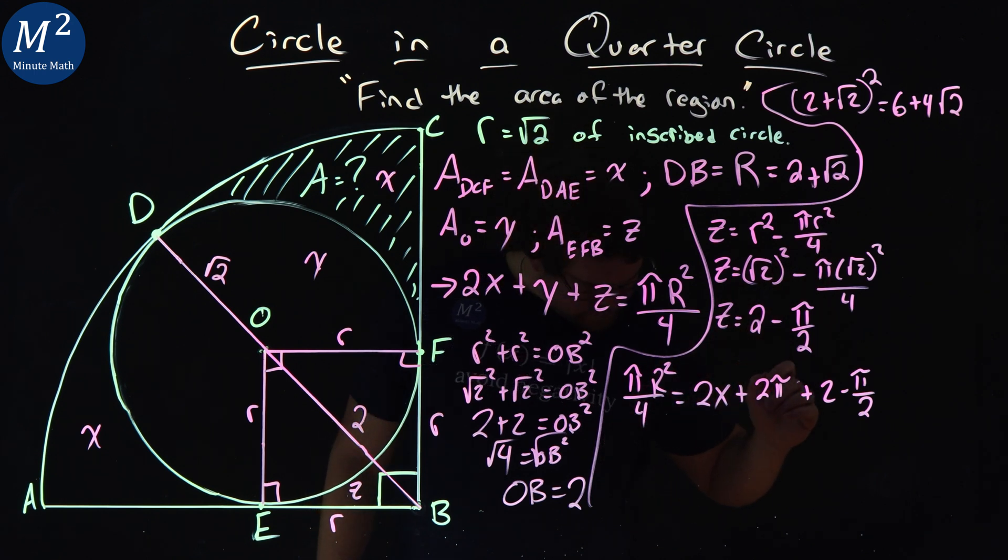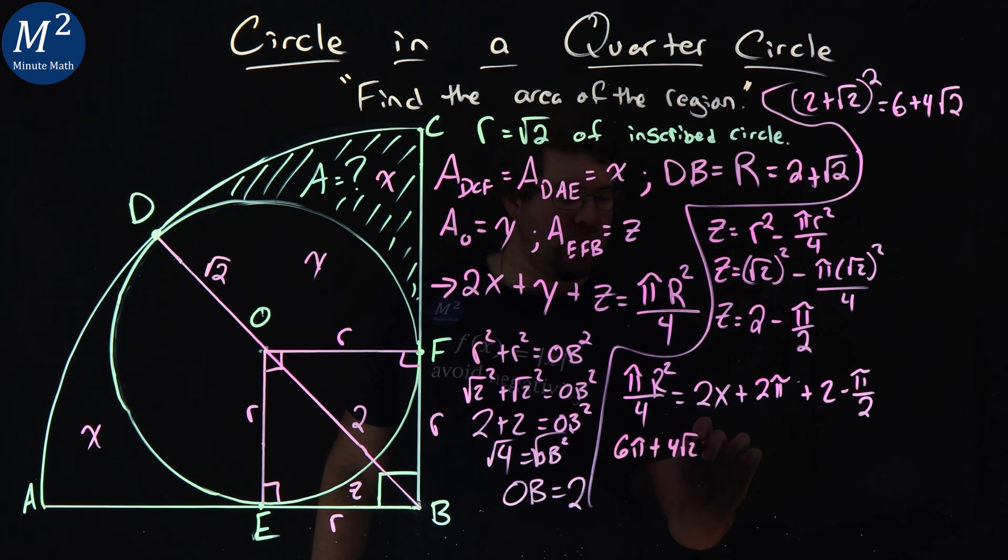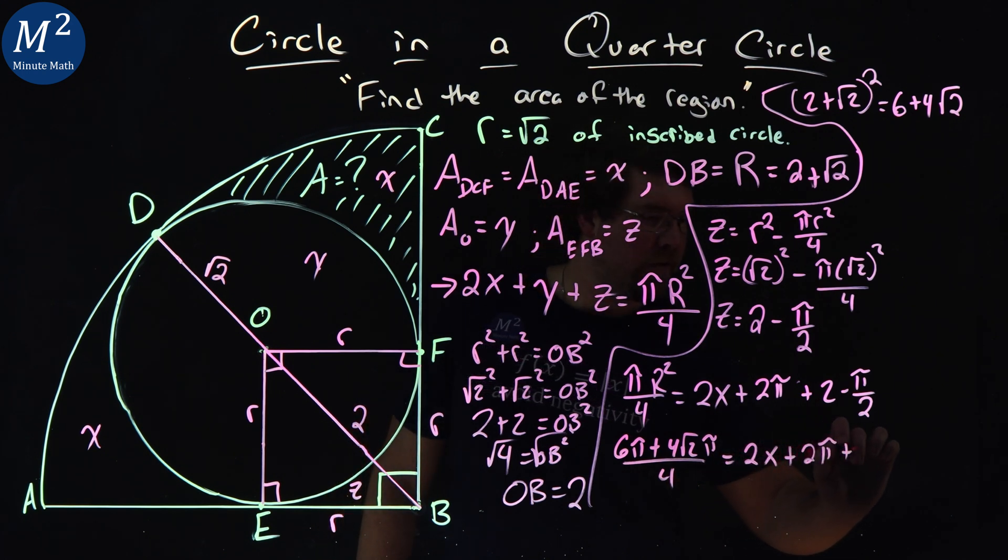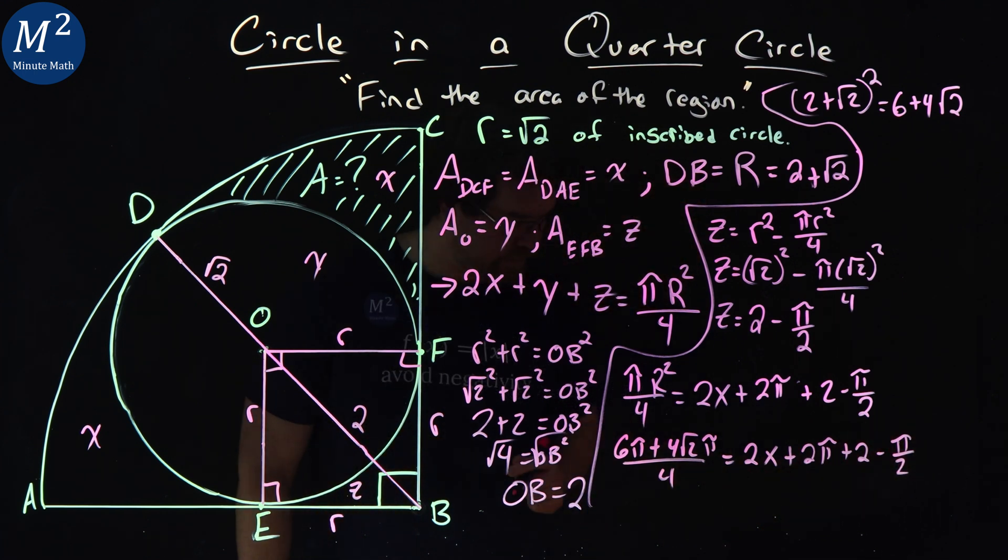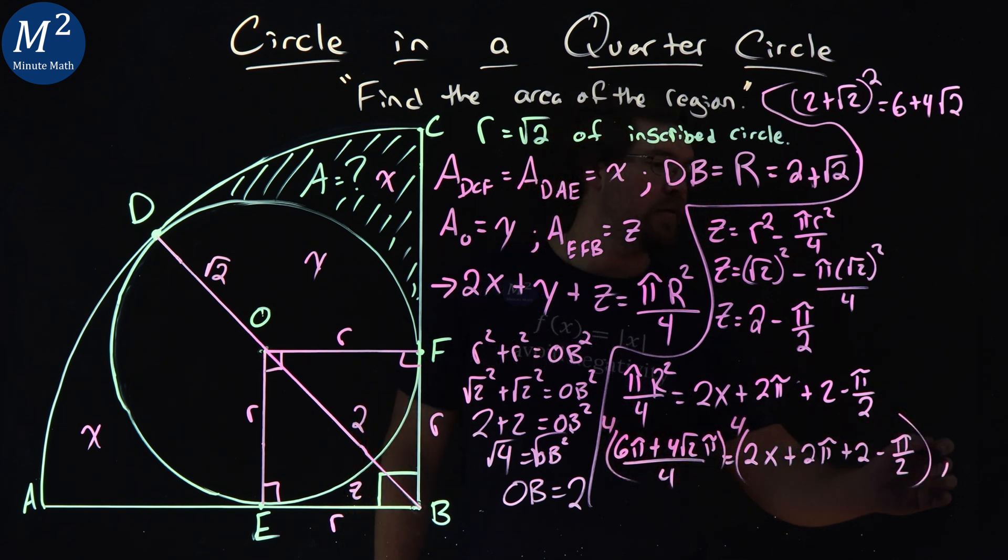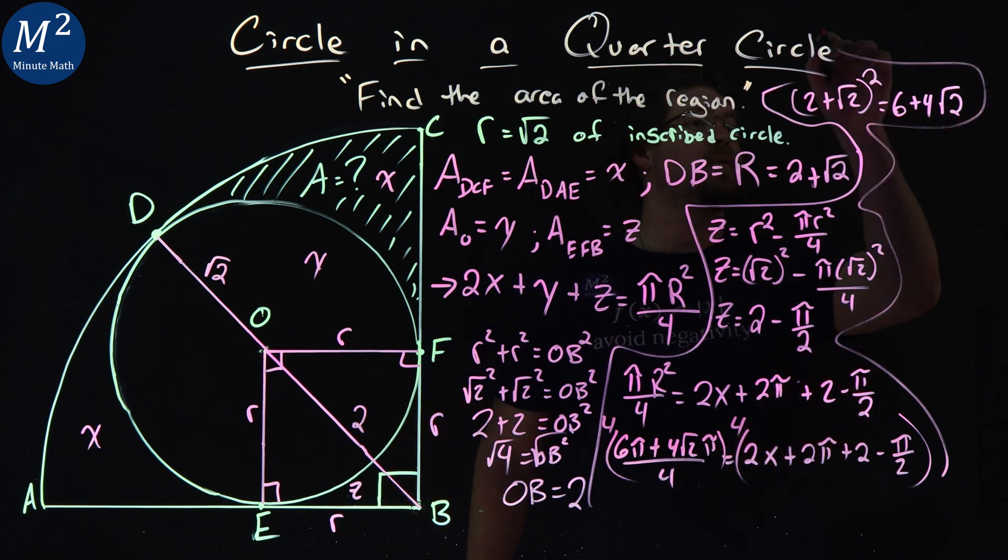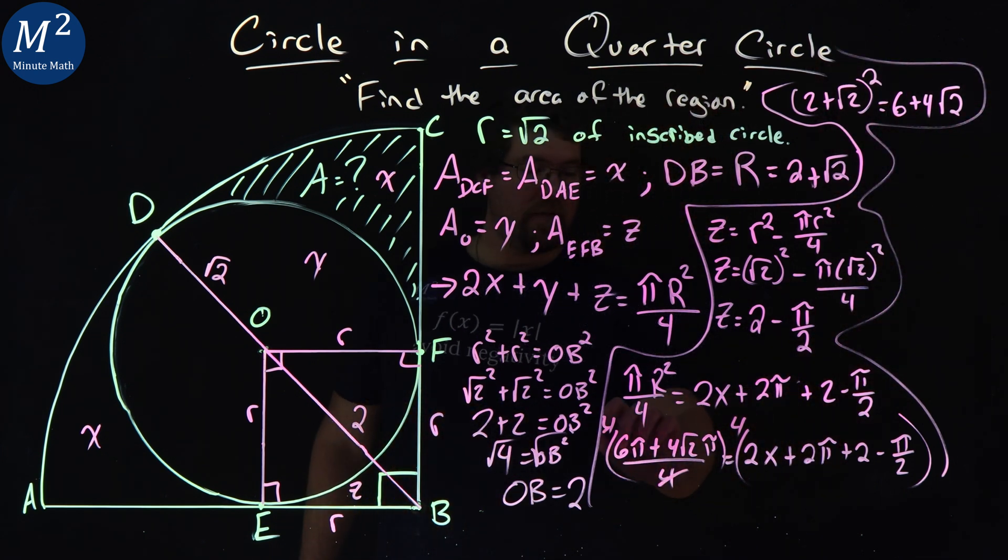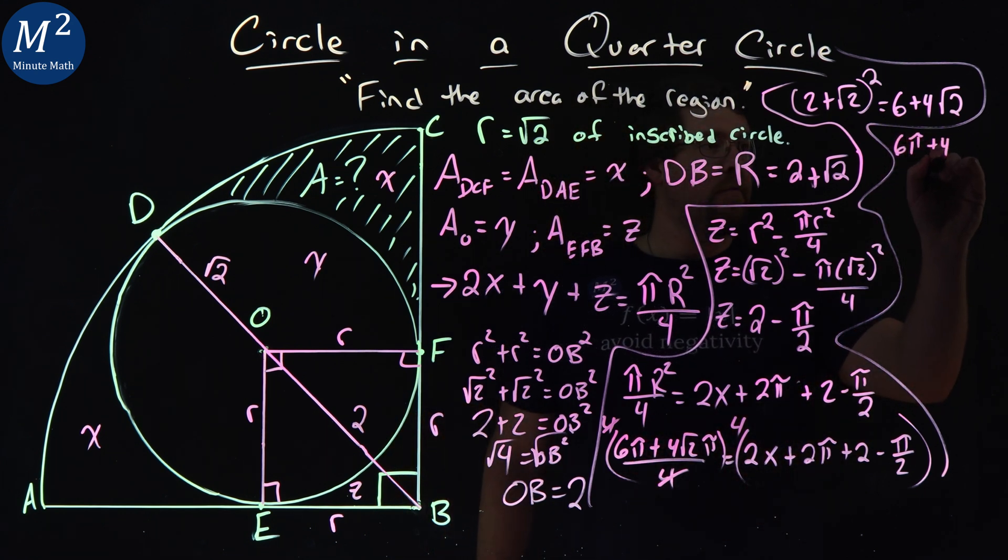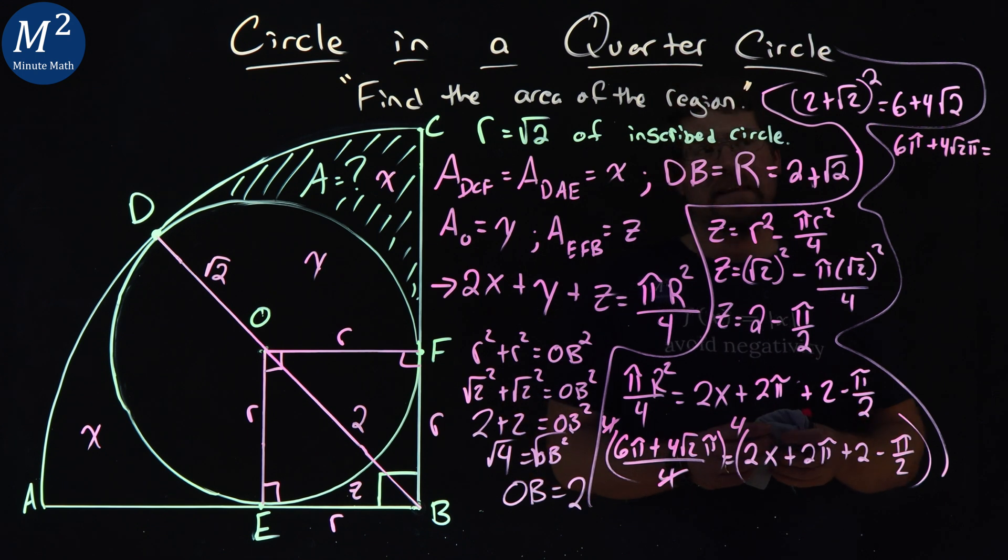Let's go, 6 pi plus 4 square root of 2 pi all over 4 equals 2X plus 2 pi plus 2 minus pi over 2. And then from here, I am multiplying both sides of the equation by 4. All right, multiplying everything by 4 cancels out this. And what do we have on the left side? We have 6 pi plus 4 square root of 2 pi.